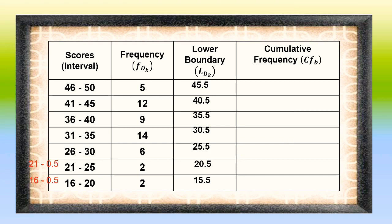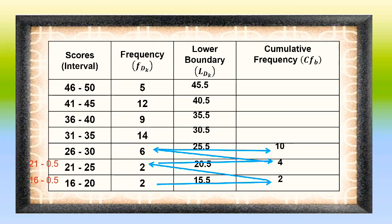Next, we complete the table for the cumulative frequency. We always begin from the lowest class up to the uppermost class. The frequency of the first class is copied directly, giving us 2, then we add the frequency of the next class to get 4, and follow the same procedure until the uppermost class. Make sure the uppermost class has a cumulative frequency equal to the total number of frequencies.